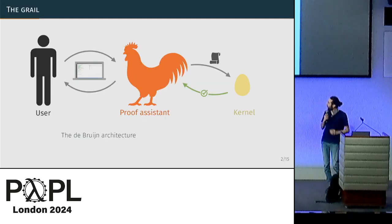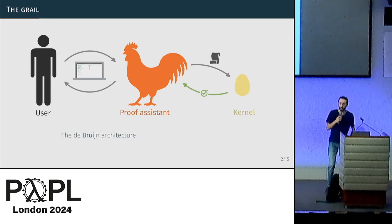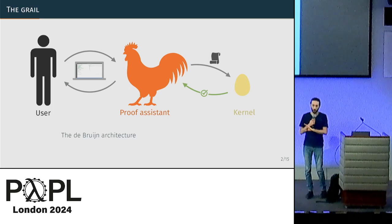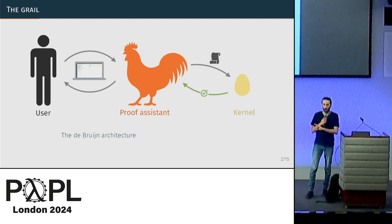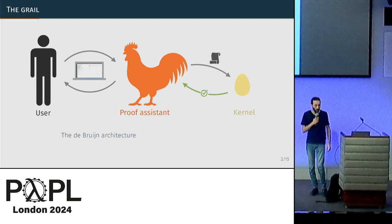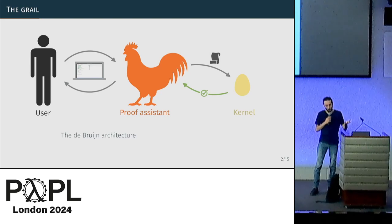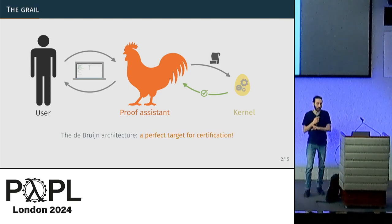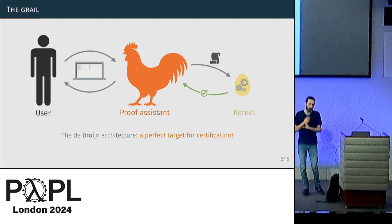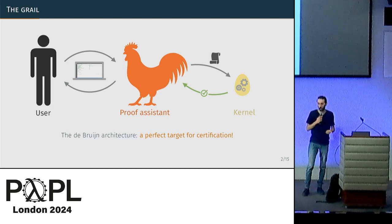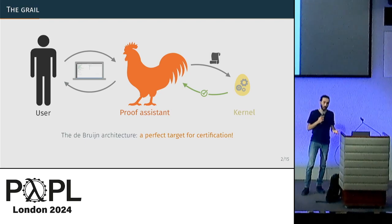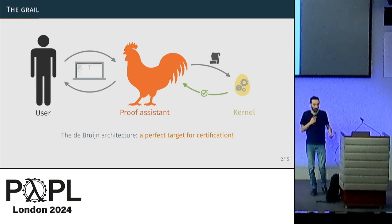Most of you are familiar with the LCF architecture: the idea that you interact with a big proof assistant doing complicated things, but that proof assistant offloads proof checking to a very small kernel. That's the only part you really have to trust. This is a very old idea and a perfect target for certification because we have this small, well-contained, well-defined critical part with a clear semantics.